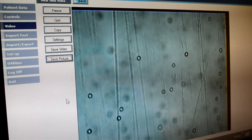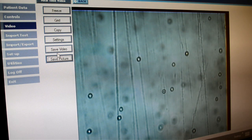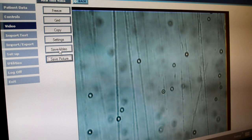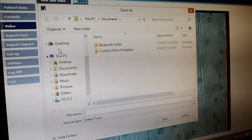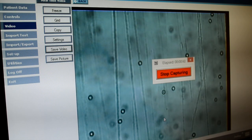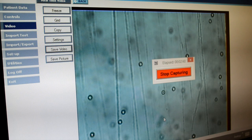You also have the option to record a video of the sample by clicking save video, second option from the bottom. Again, you'll name the file as you choose and click save to begin the recording. The image is now being recorded.